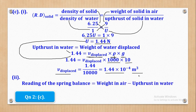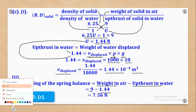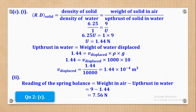For Roman 2, the reading of the spring balance equals the weight in air minus the upthrust in water. Weight in air is 9 N and upthrust is 1.44 N. Subtracting gives a spring balance reading of 7.56 N. That's what they wanted.